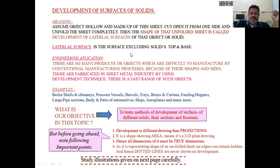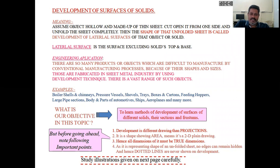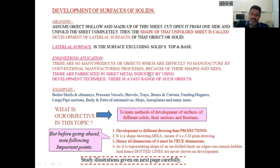The lateral surface is the surface excluding the top and bottom. For example, take a cylinder — the lateral surface means the cylindrical surface only, excluding the top and bottom. Similarly, a prism consists of a top and base with the same shape, which can be triangular or hexagonal. Pyramids and cones have an apex on one side and a base on the other. Without considering the base and top, those surfaces are called the lateral surface.